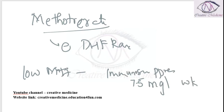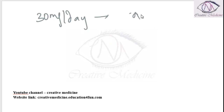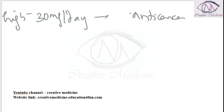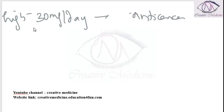If you give Methotrexate at a dosage of 30 mg per day, then it has an anti-cancer effect. So Methotrexate at lower doses has an immunosuppressive effect, whereas at higher doses it has an anti-cancer effect.